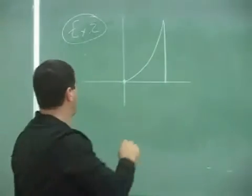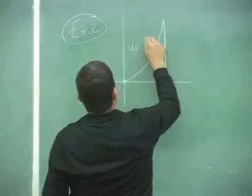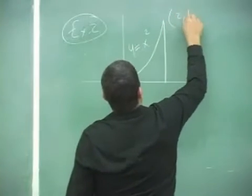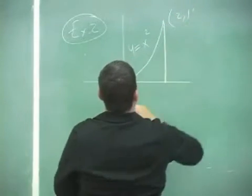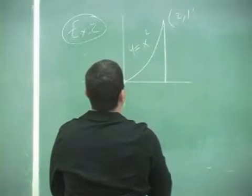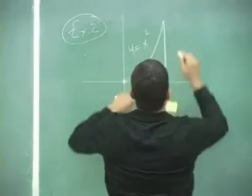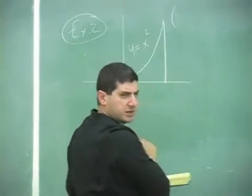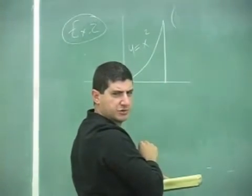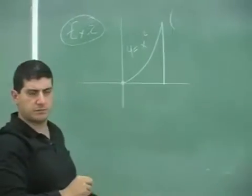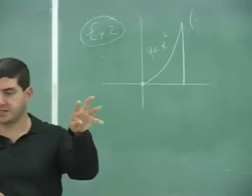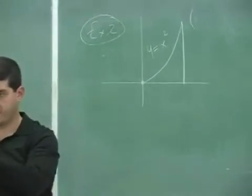Right? I believe we did zero to three, was it? Or zero to two? I think zero to two? Or zero to three? And we found its X center of mass and Y center of mass, right?